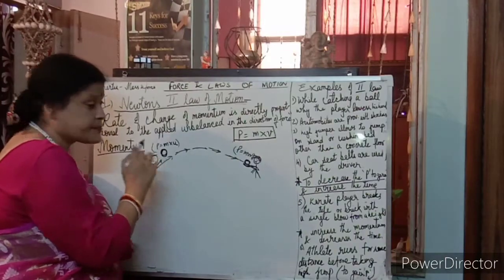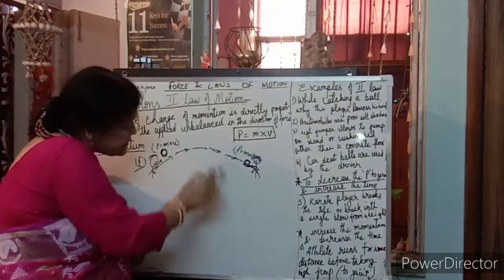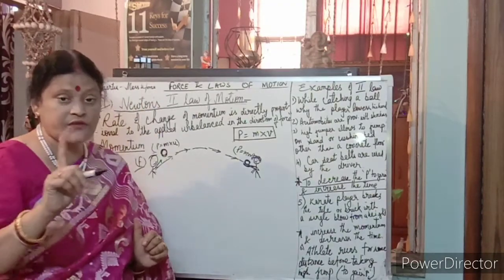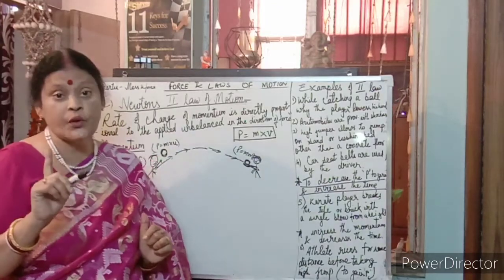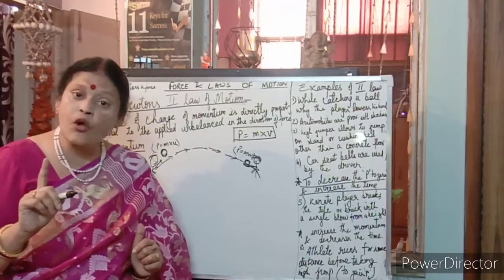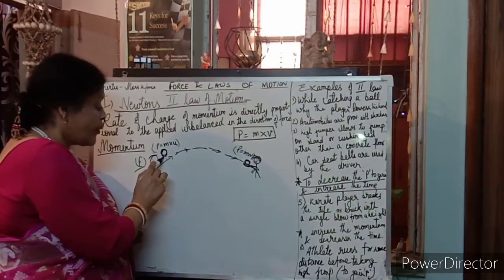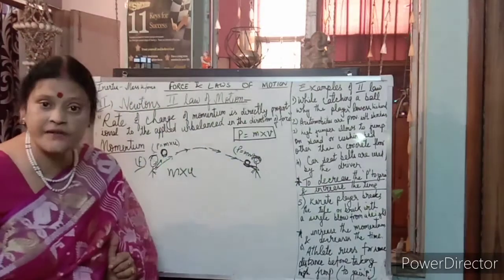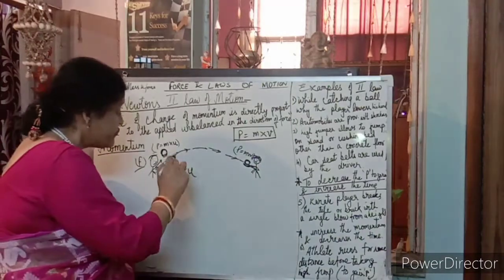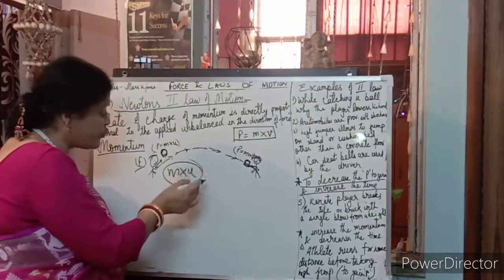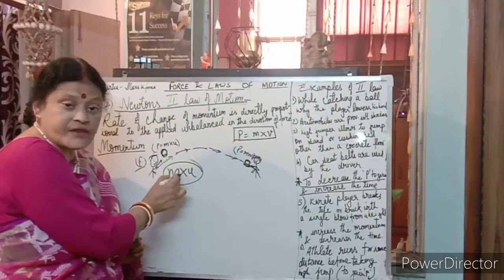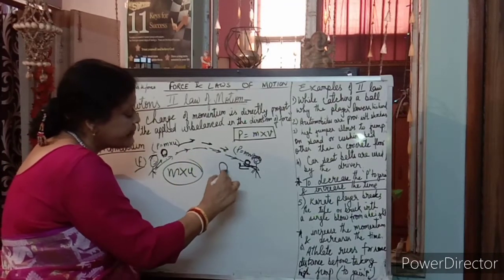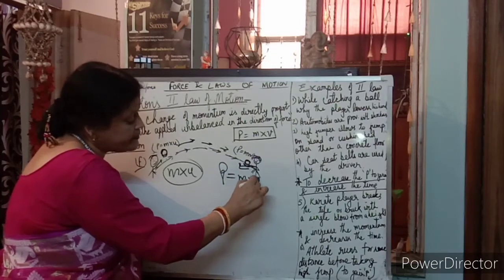When force is applied on the ball, it starts moving with an initial velocity u. The ball has its own mass m and moves with initial velocity u. When it reaches the final position it has mass m and final velocity v, giving final momentum m×v.